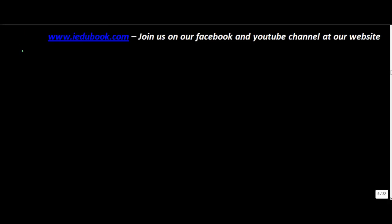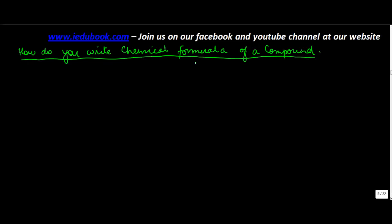Let us understand how do you write the chemical formulas of compounds. In some of the previous videos you understood about the symbols of various elements. Sodium is written as Na and chloride is written as Cl.